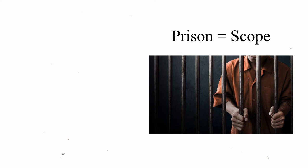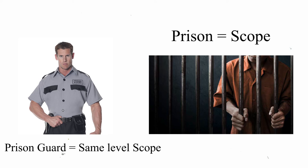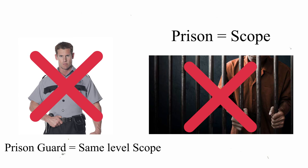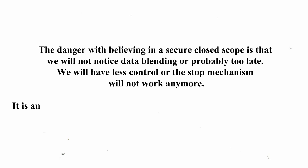Compare this to a prisoner: its scope is the prison and the barrier is the wall. Let's assume the prison walls aren't breakable — as long as there is no parent scope involved, this situation might last forever. But within the prison scope, prison guards are injected. Those have parent rights and privileges but also exist in the prison scope. A small failure with a prison guard — corrupt behaviour — and the so-called closed scope is broken. The danger with believing in a secure, closed scope is that we will not notice data blending, or perhaps too late. We will have less control, or the stop mechanism will not work anymore. It is an illusion that when playing in a sandbox, nothing will be spilled.